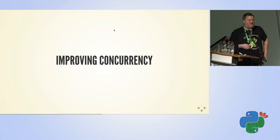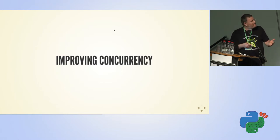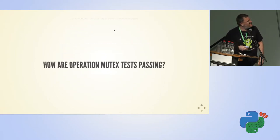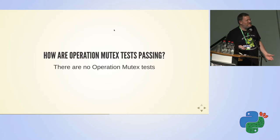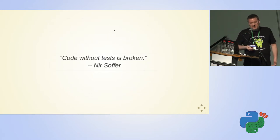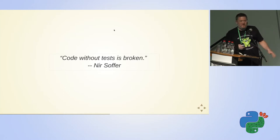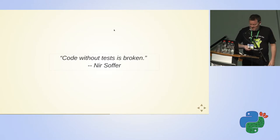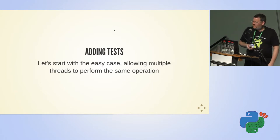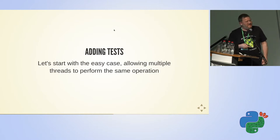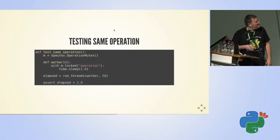To understand how we can improve this situation, maybe we want to look at the tests. If you look at the tests of this code, maybe we can understand the issues. What about the tests of the operation mutex? We found that we don't have any tests for this code. And we know that code without tests is broken. So let's try to add tests, because if we can reproduce this issue in a test, it will be much easier to understand and fix it. The first test will be to do the same operation at the same time. This is a simple test using PyTest with no boilerplate — we create an operation mutex and have a worker function locking the mutex for the same string, then sleeping one second.